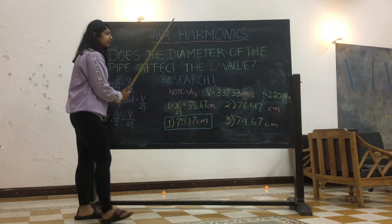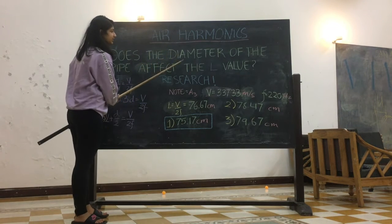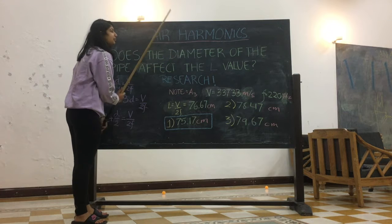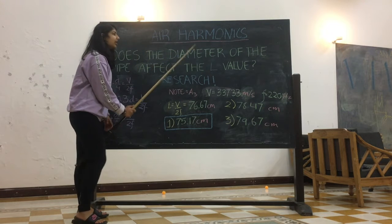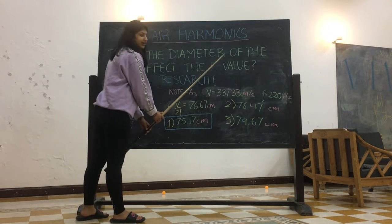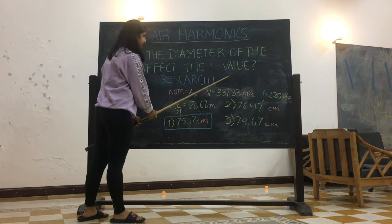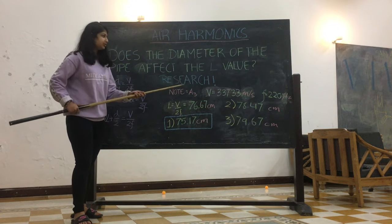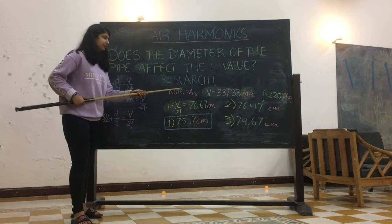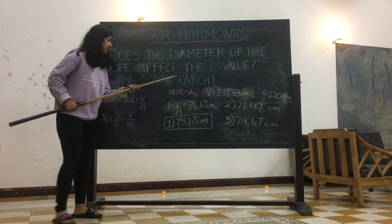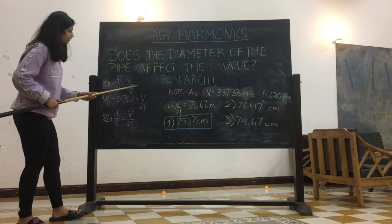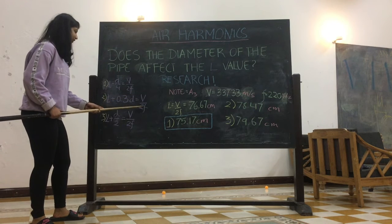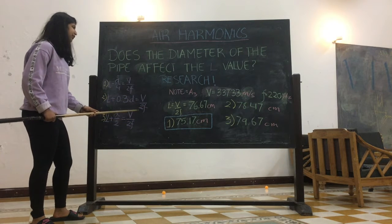Because the pipes were cylindrical in shape, we also had to account for the diameter and figure out how the diameter would affect the L value. We did research and found three different ways on the internet of how the diameter would affect the L value.